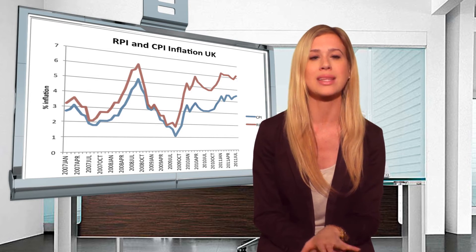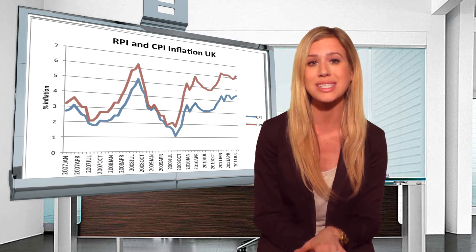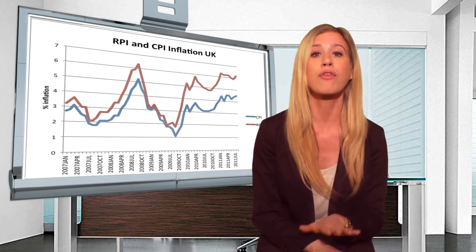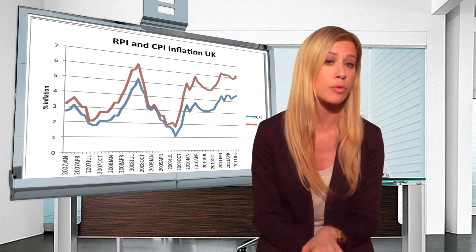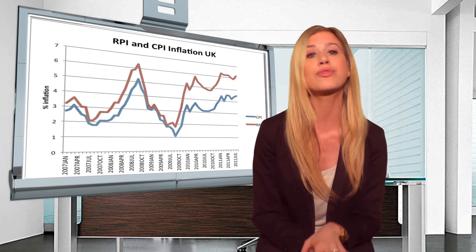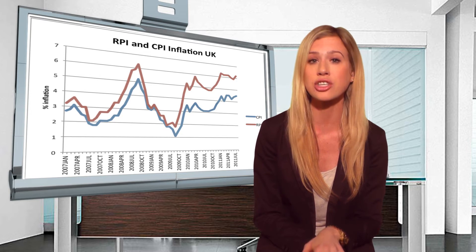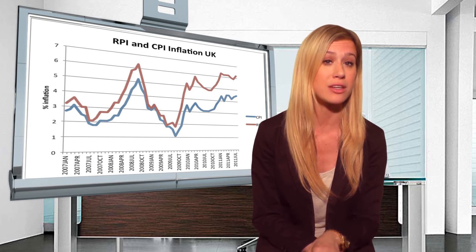In the RPI report, the headline figure is the index's percent change from following quarters, and the actual RPI figures in the index are used for indexation of state benefits and pensions.